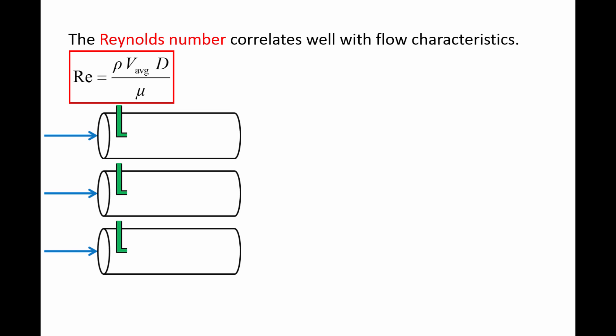Imagine that we have three pipes filled with a fluid flowing left to right. The flow speed, pipe diameter, and fluid may be different in the three pipes. We insert a small tube into the pipes that will inject green dye into each of the flows.